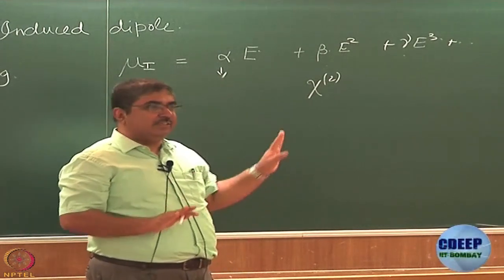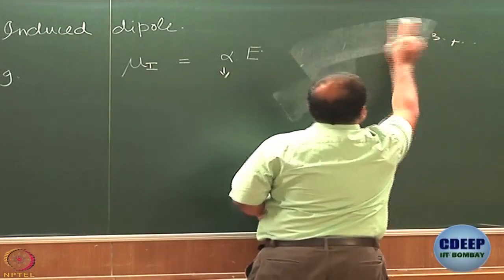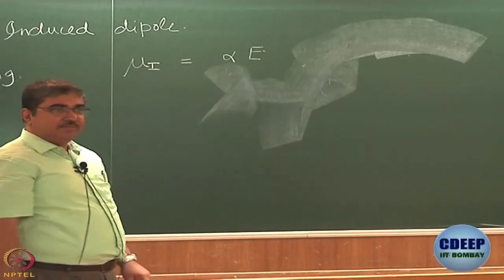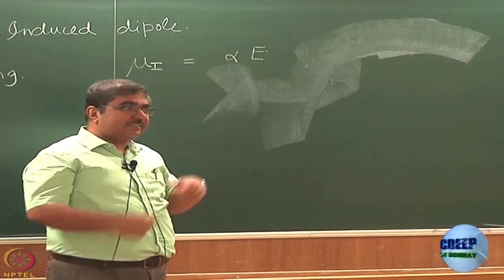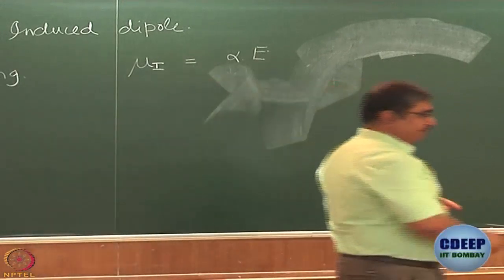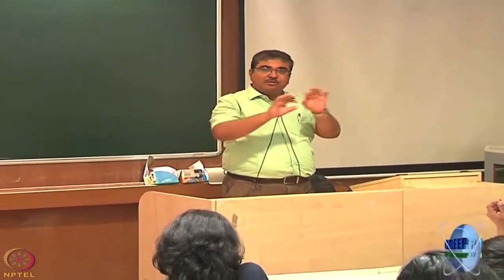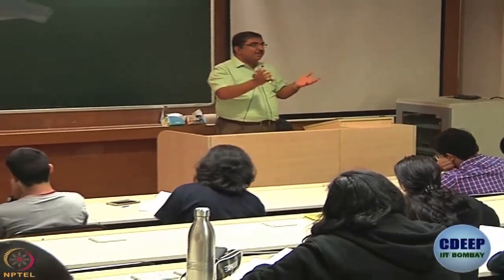Alpha is not a straightforward number — it is important that we understand this, as it will come in handy in a few weeks. Polarizability means how easily you can distort the electron cloud. The electron cloud is not one-dimensional or a point; it is a three-dimensional object.